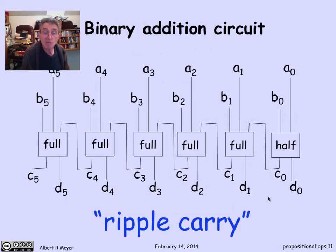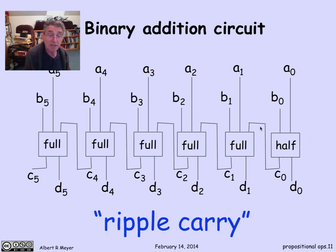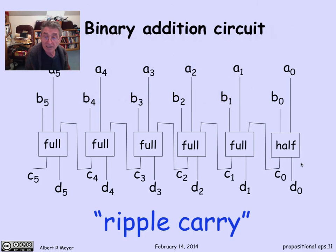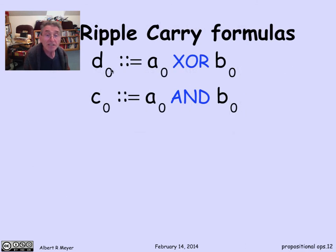Now let's go back to describing our ripple carry circuit. Now that we have the equations characterizing the behavior of these full adders and half adders, we can express the formulas for all the outputs — the C's and the D's. Looking at the half adder with A0, B0 coming in and C0, D0 coming out: D0 = A0 XOR B0, and C0 = A0 AND B0. That's just the half adder formulas when the inputs are A0 and B0.